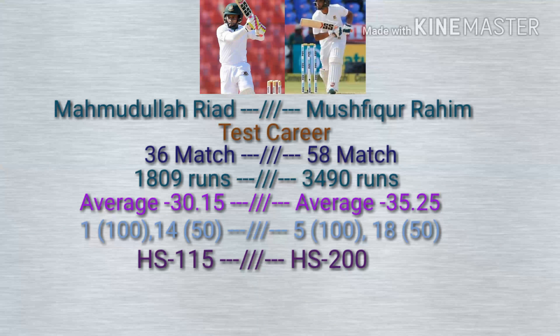The best score of Mushfiqur Rahim is 72 and Mahmoudullah Riyadh is 64. So who is best? Let us know in the comments below. Thanks for watching — please subscribe for the next update. Stay happy, stay cool, stay with us. Thank you.